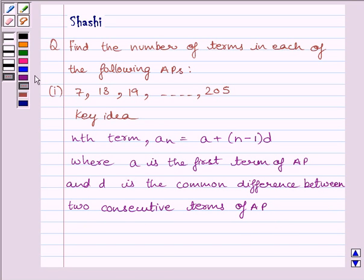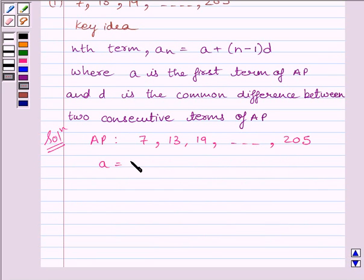Now, let us start with the solution. The AP given to us is 7, 13, 19, till 205. Clearly, we can see the first term of AP is equal to 7, and the common difference between the two consecutive terms is equal to 6.